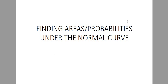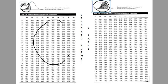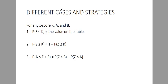Good day. We'll be discussing how to find the areas and probabilities under the normal curve. When you search the internet, there are two or three types of Z-tables. I'll be using this type of Z-table where the areas or probabilities inside this table come from the left side of the normal curve. All the areas here come from the left side. I will discuss three different cases and strategies on how to find the areas or probabilities in this normal curve.